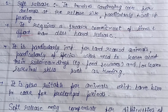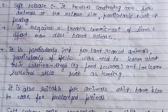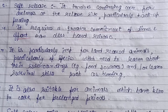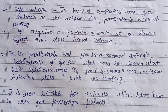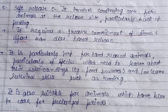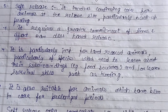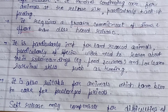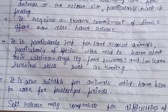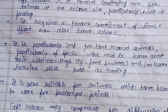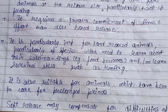Soft release is particularly important for hand-reared animals and for species that need to learn about their surroundings — for example, food sources — and to learn survival skills such as hunting. Juveniles that do not know how to obtain food or hunt require soft release to teach them those skills and help them adapt to their natural environment. It is also suitable for animals that have been in care for a prolonged period, as they have adapted to captivity and require help readapting to natural conditions.